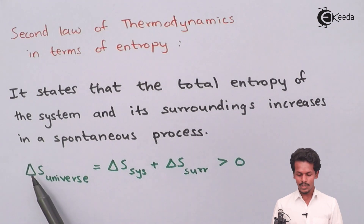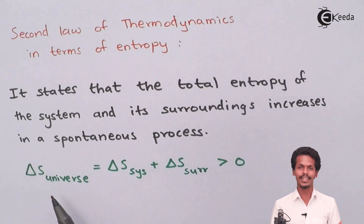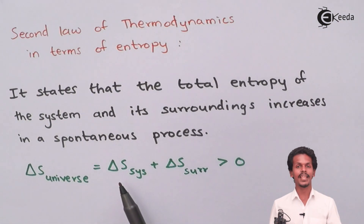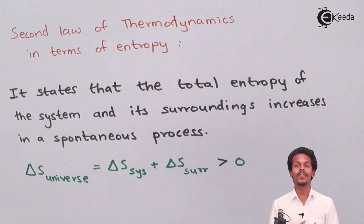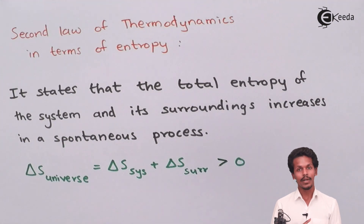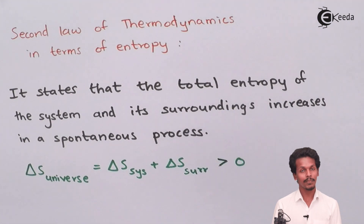The total entropy of the universe is: ΔS_total = ΔS_system + ΔS_surrounding, and this must be greater than zero — meaning it will always be positive. Since ΔS_total is positive, the reaction is said to be spontaneous. This implies the total entropy of the system and surroundings will always be positive in a spontaneous process.